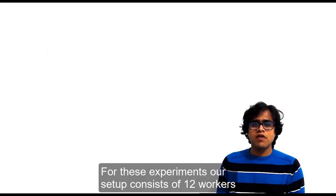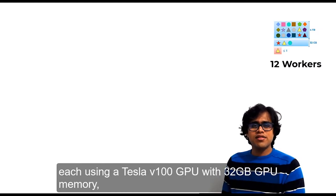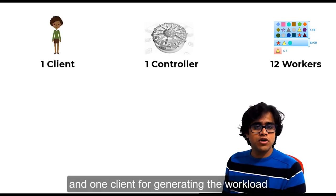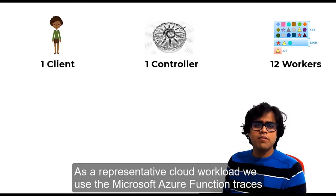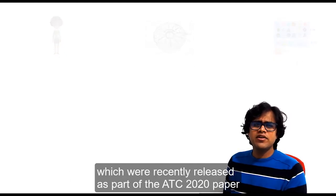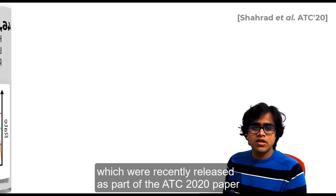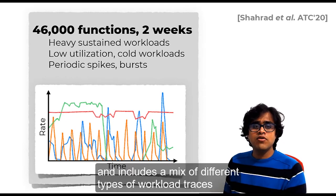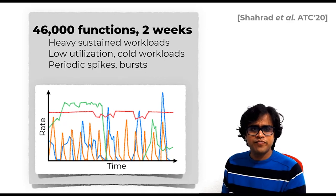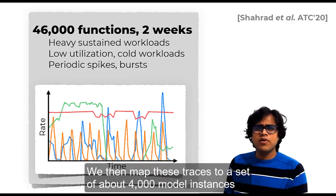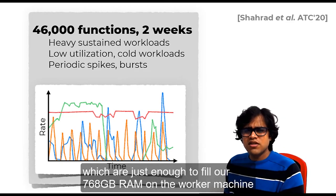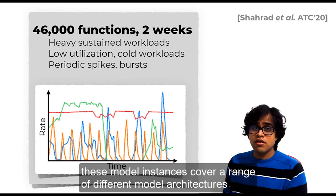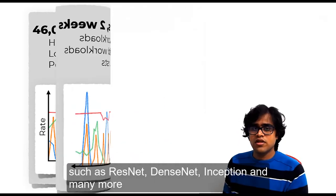For these experiments, our setup consists of 12 workers, each using a Tesla V100 GPU with 32 GB GPU memory, one controller, and one client for generating the workload. As a representative cloud workload, we use the Microsoft Azure Function Traces, which were recently released as part of the ATC 2020 paper. The workload consists of about 46,000 function traces spanning over a 2 week period and includes a mix of different types of workload traces. We then map these traces to a set of about 4,000 model instances, which are just enough to fill our 768 GB RAM on the worker machine. These model instances cover a range of different model architectures, such as ResNet, DenseNet, Inception and many more.